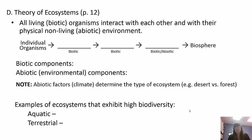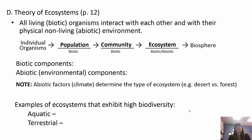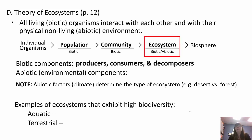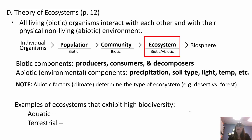The theory of ecosystems states that all living things, which are biotic, interact with each other and with their nonliving — abiotic — environment. Individual organisms make up a population, populations make up communities, and communities make up the ecosystem, which takes into account abiotic factors like wind, temperature, and precipitation — all leading to the biosphere. We have biotic components: producers, consumers, and decomposers. We have abiotic components like precipitation, soil type, light, and temperature. Abiotic factors determine the type of ecosystem you live in — desert versus tundra versus forest, for example.